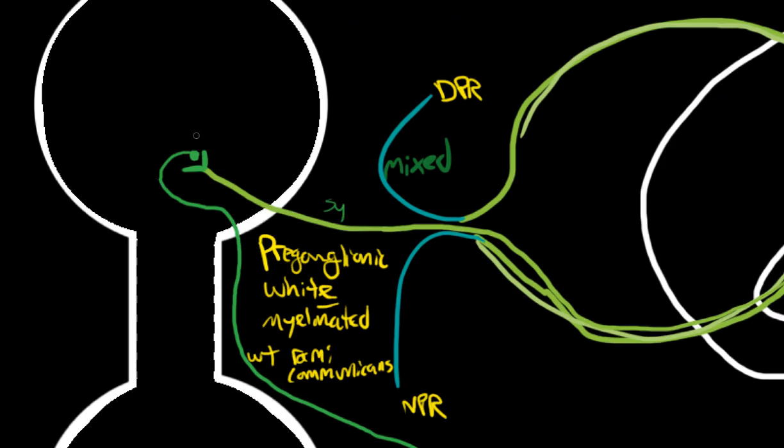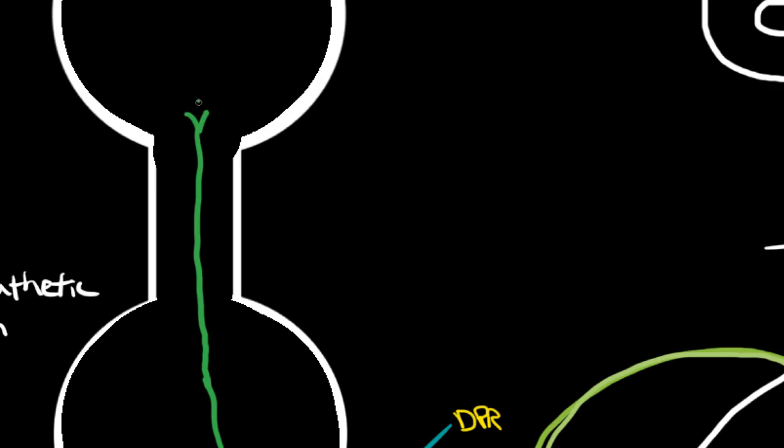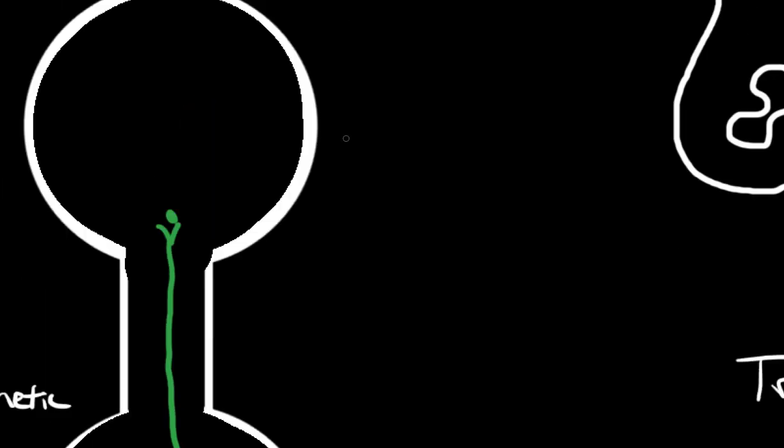So when the sympathetic fibers get into the ganglion, they can, in addition to synapsing at the same level, they can also ascend before they synapse, going into cervical ganglia. So let's pretend here that this is the superior cervical ganglion. And from it we would have the superior cervical cardiac nerve.